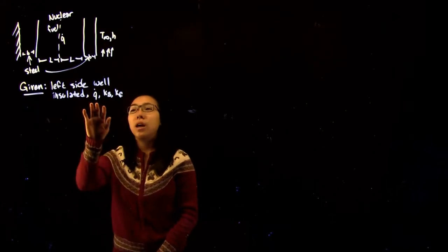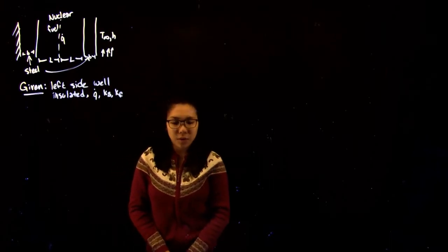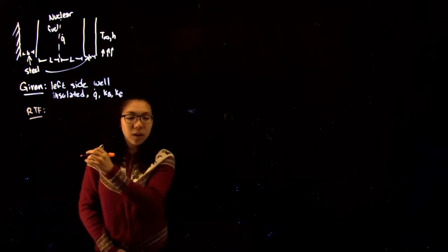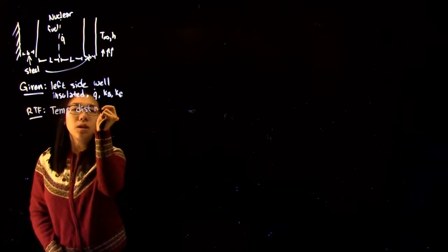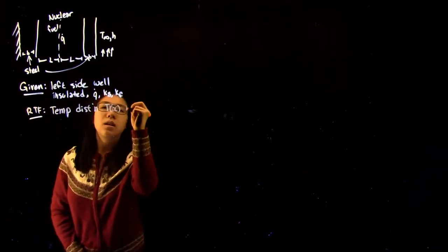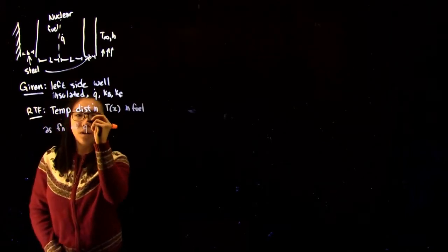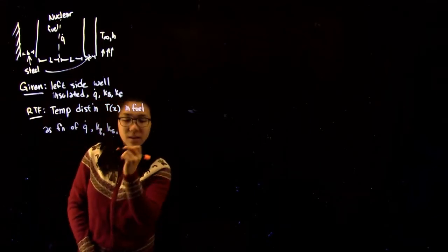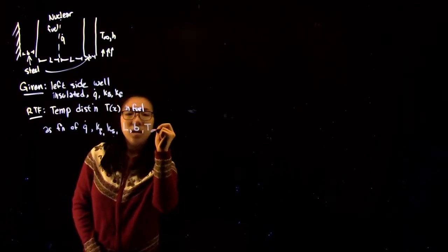Assuming we're given the values of the heat generation and the thermal conductivities of the steel and the fuel, what we want to find is the temperature distribution for the entire region of the wall — specifically, the temperature in the fuel as a function of the heat generation, the thermal conductivities, the length of each section, and T infinity.